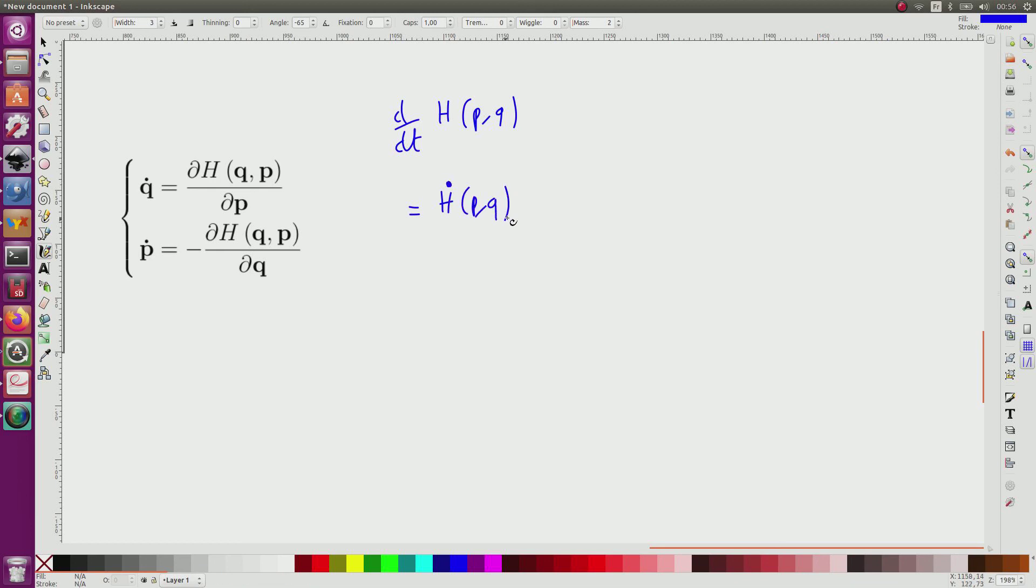So it will be equal to h dot of (p, q), and this corresponds to the partial derivative of h with respect to p at point (p, q) multiplied by p dot, plus the derivative of h with respect to q at point (p, q) multiplied by q dot.